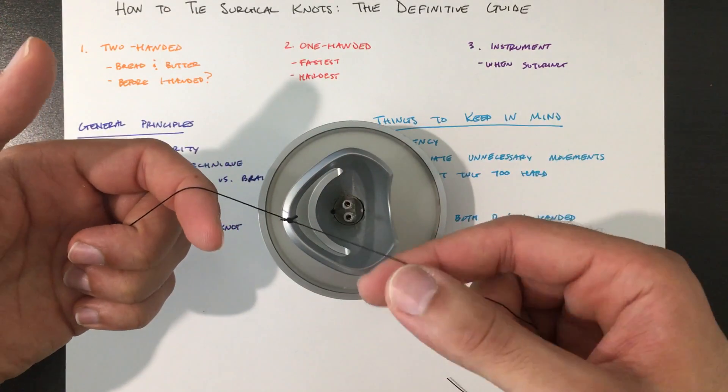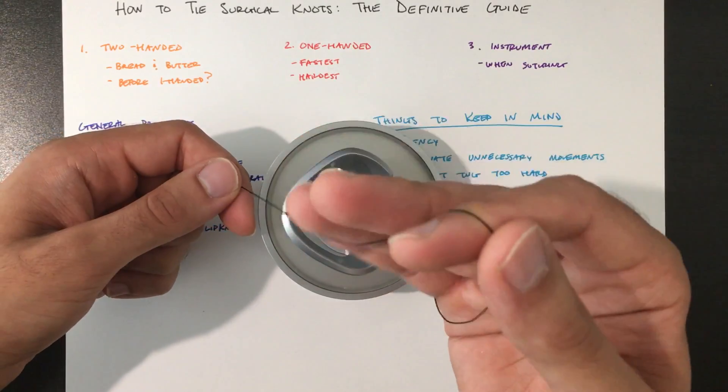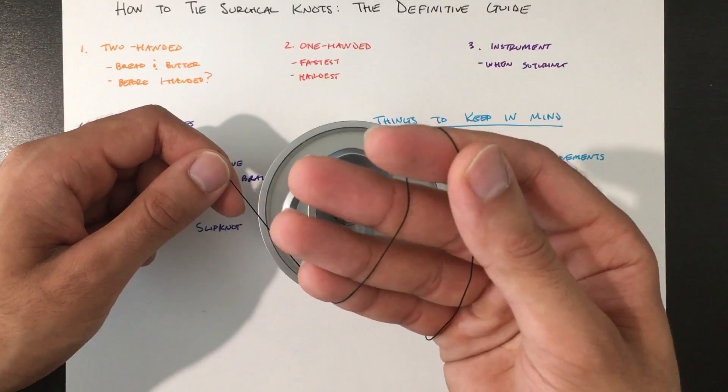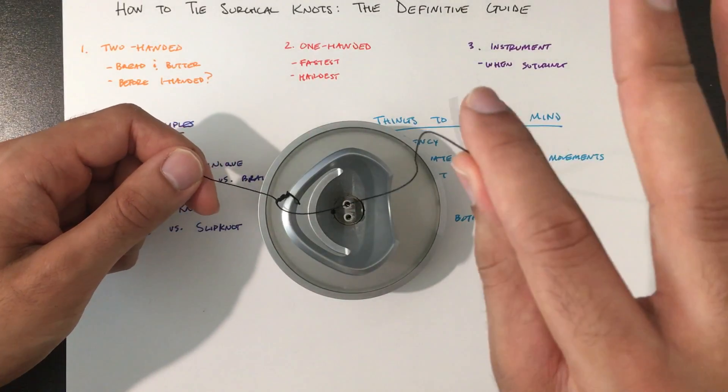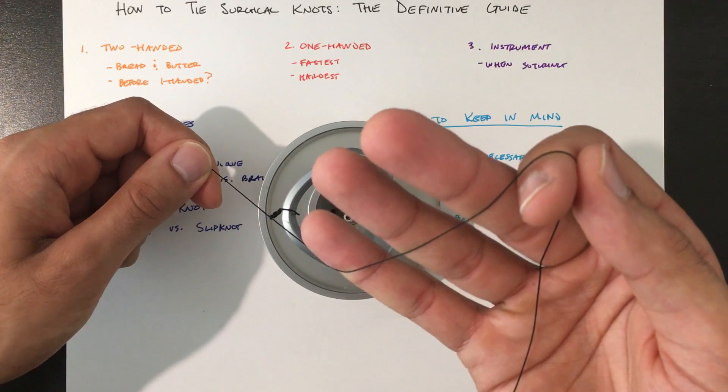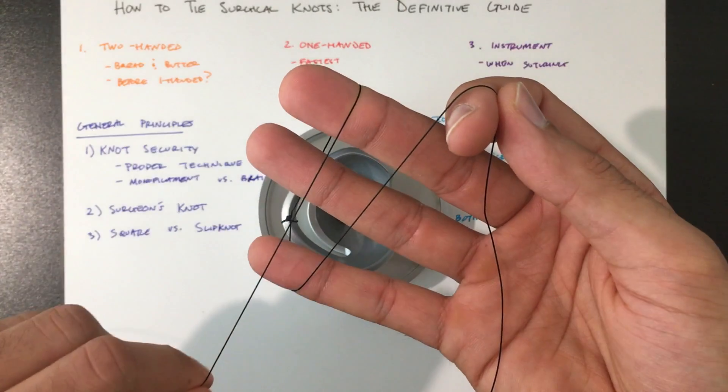So again, start like this, grab these three fingers and put them underneath. So again like this, three fingers underneath, take the other side, wrap it in the opposite direction.